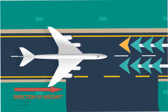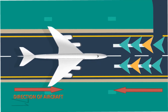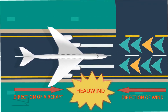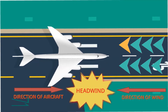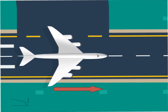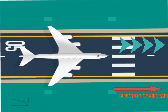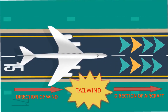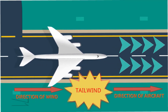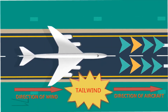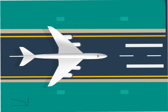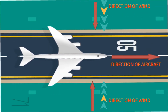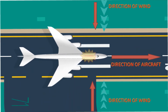If the direction of the aircraft movement and the direction of the wind are opposite to each other, the condition is known as headwind, because the wind is coming onto the head of the aircraft. If both directions are the same, the condition is known as tailwind. If the wind direction is perpendicular to the direction of aircraft movement, the condition is known as crosswind.